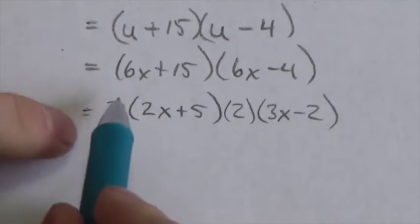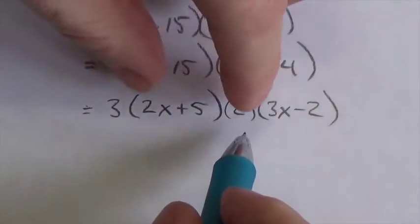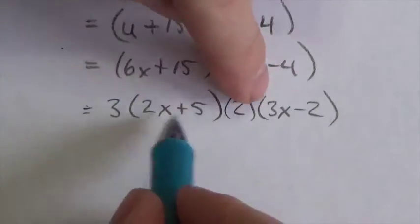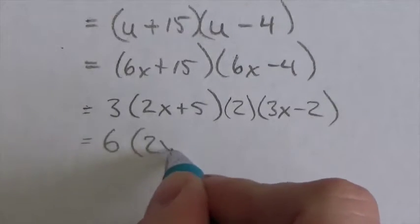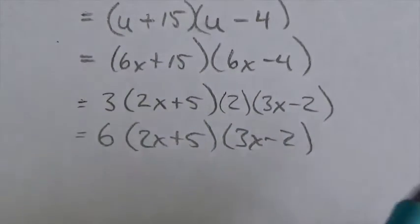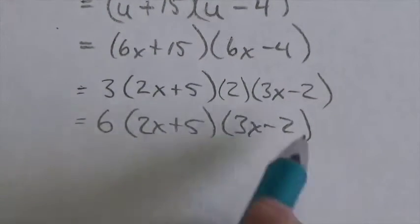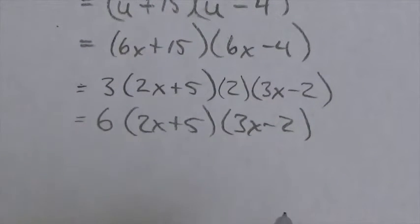So I've got this 3 that I pulled out, I've got this 2 that I pulled out. Because I can change order with multiplication, I'm going to swap these two and pull the two out. And then the 2 times 3 is 6. 2x plus 5, 3x minus 2. So I've got this thing factored, it's looking great, except I've got this multiple of 6 out front. Well, what do I do with that?